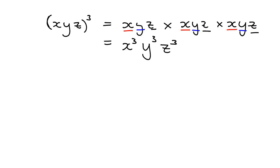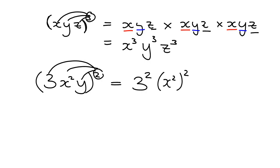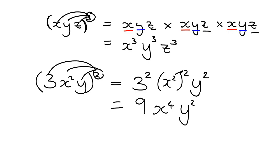The rule tells us that if you've got a group of things multiplied together and they are all raised to a power, that power must apply to everything inside. So if we had 3x squared y, all to the power of 2, this 2 must apply to everything inside: you get 3 squared, x squared squared, and y squared. 3 squared is 9, x squared squared gives x to the 4 (since 2 times 2 is 4), and that gives us 9x to the 4, y squared.